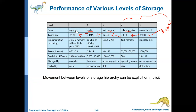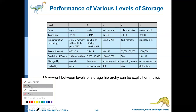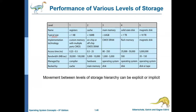Now we will understand the various features of these different storage devices. As of the current scenario, the typical size of registers is less than one kilobit, cache memory is less than 16 MB, main memory is less than 64 GB, solid state disk is less than one terabyte, and magnetic disks are less than 10 terabytes.